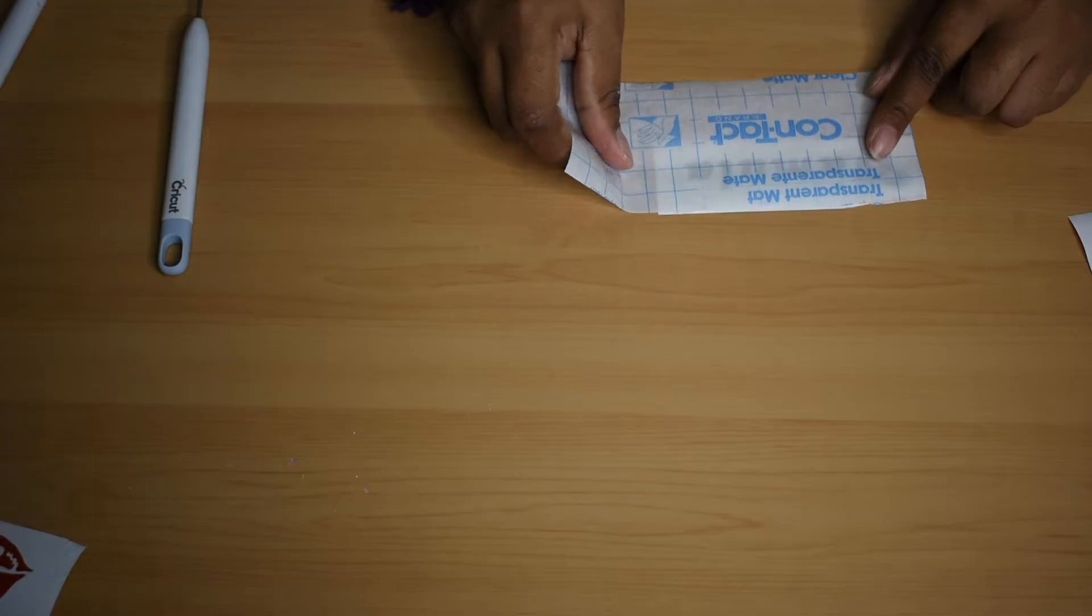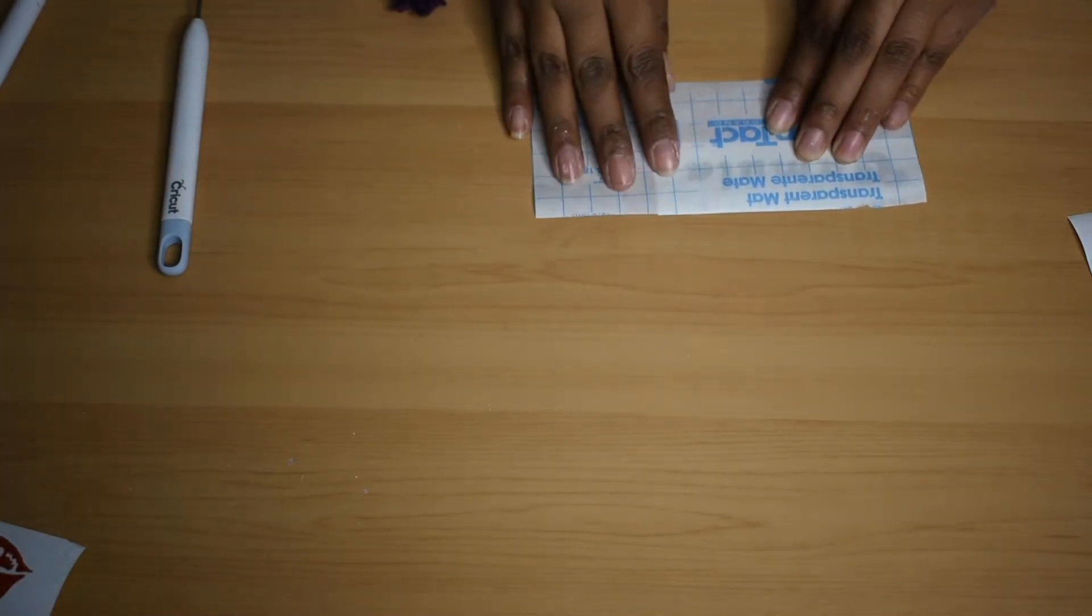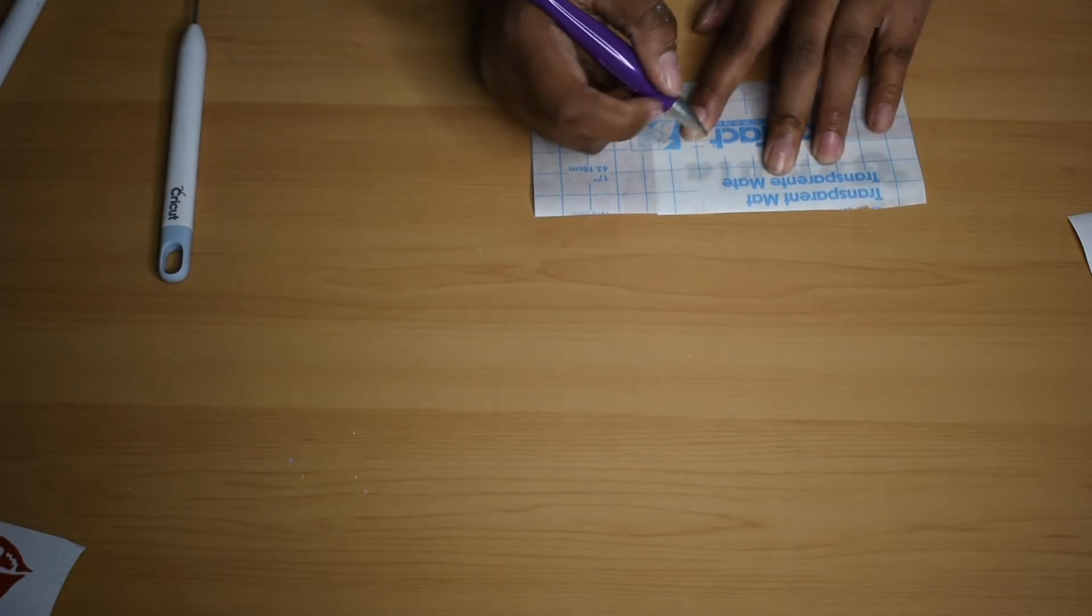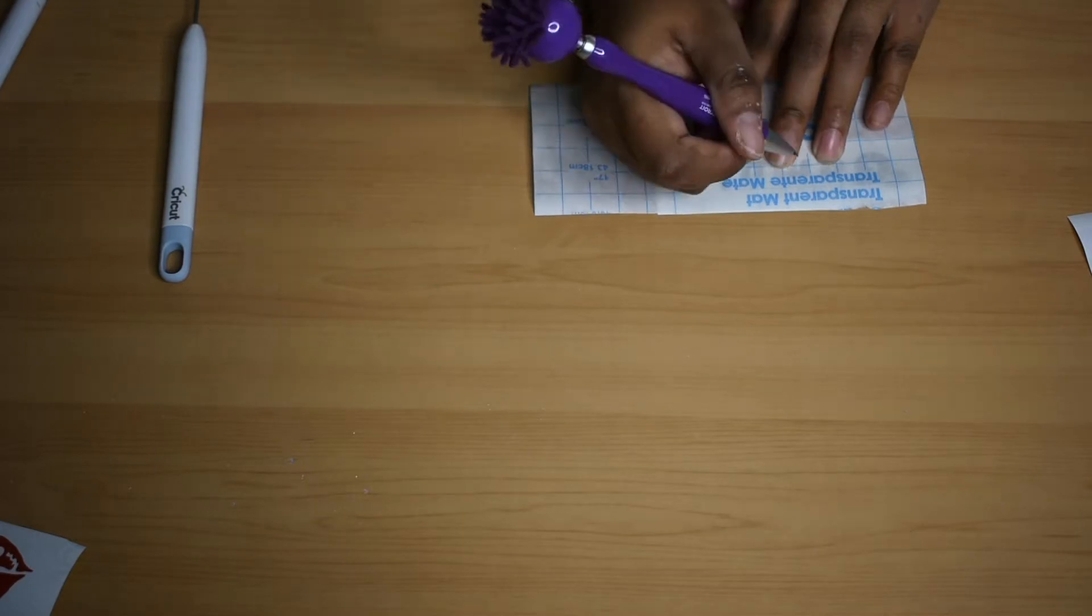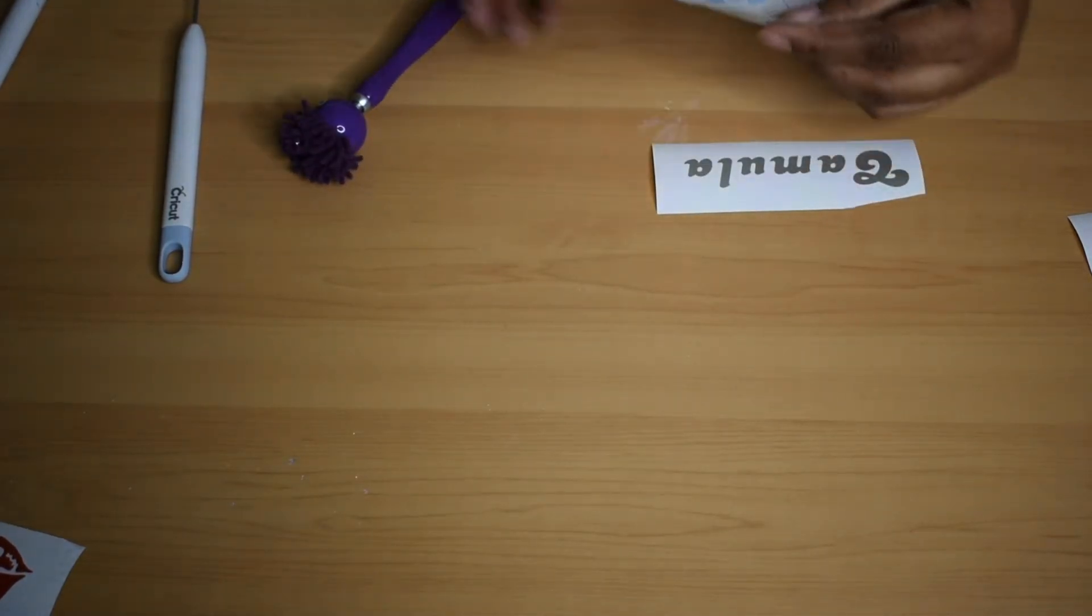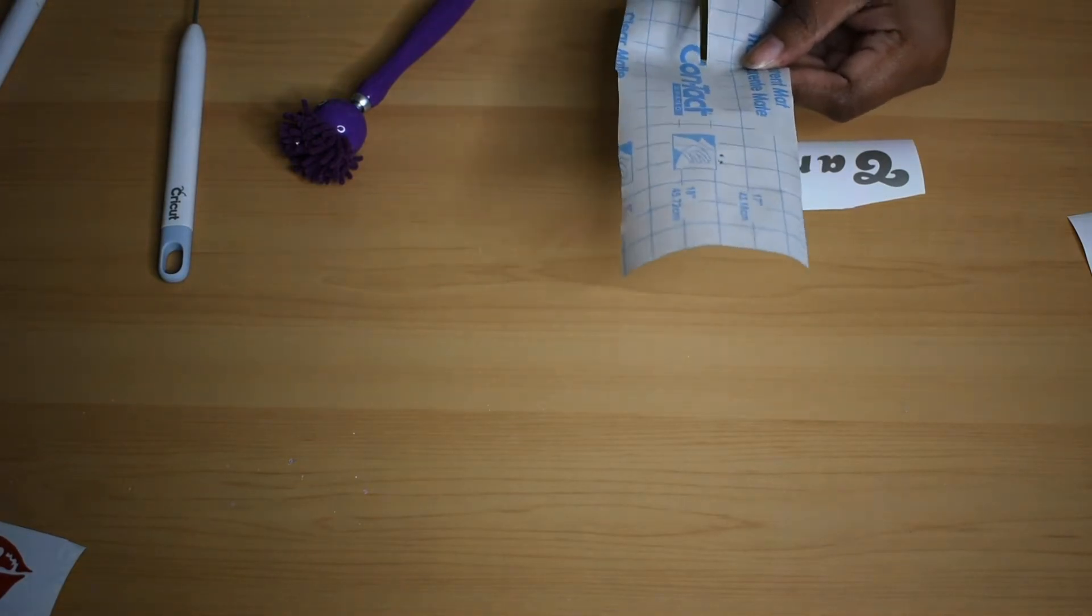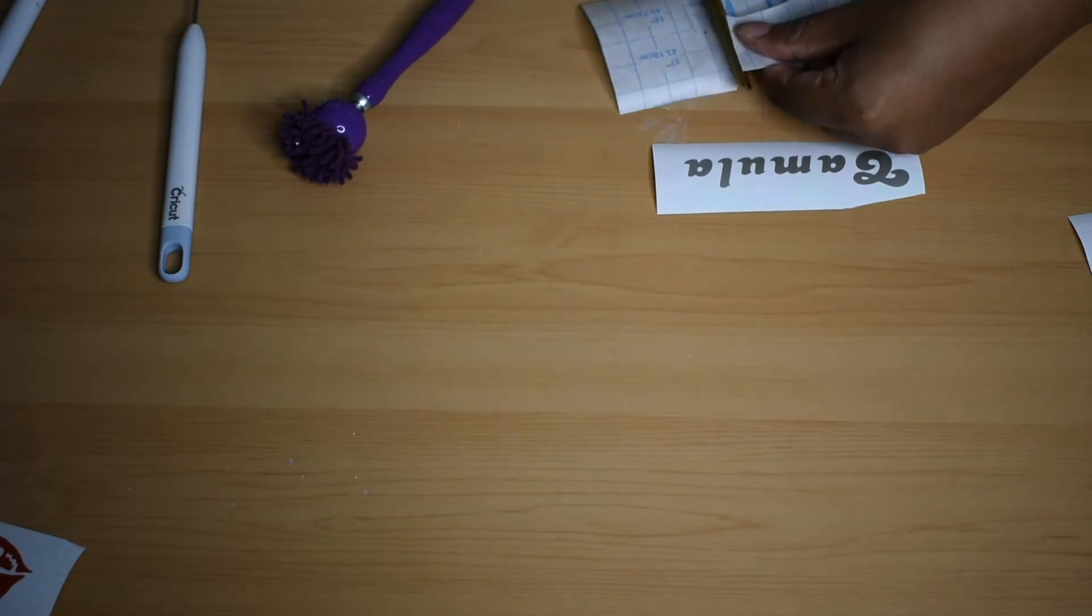So I'm using contact paper. I have so much contact paper is not even funny. So Cricut has their own brand of contact paper. I prefer to use this type of contact paper. So what I do is I use my pen to make a mark where I need to cut with some scissors and I usually cut the exact size of the letters and transfer the letters onto the contact paper.